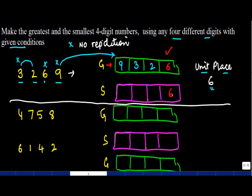Similarly, for the smallest number, 6 is already used and I'm left with 3, 2, and 9. I put the smallest digit first, which is 2, then the next smallest among the remaining — which is 3 — and then 9. Six is not reused because no repetition is allowed. So the smallest number is 2, 3, 9, 6.